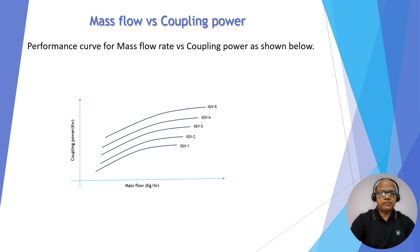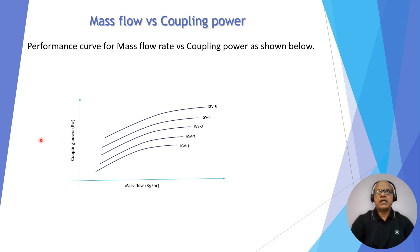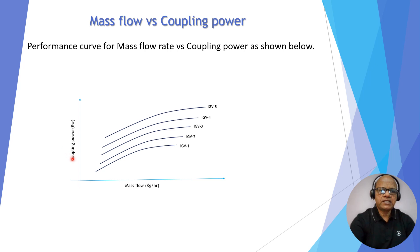Now, performance curve for mass flow rate and coupling power. Coupling power is the power consumed by the compressor — it is the stage power. If it is multi-stage, you have to add all the power of the stages of the compressor plus mechanical losses, gear losses, and all the losses; this becomes the coupling power — the overall power consumed by the compressor. In kilowatt on the y-axis and mass flow rate on the x-axis, we have different IGB positions with a different curve for power. Higher the curve, you will get higher flow and higher coupling power.